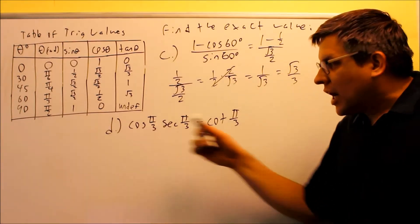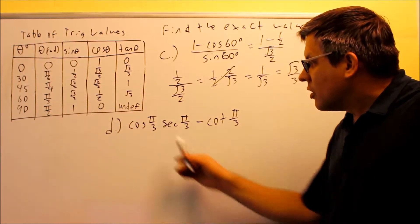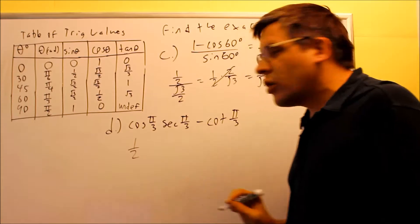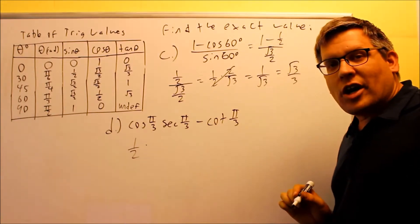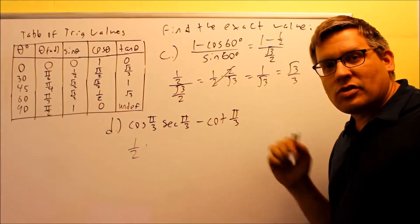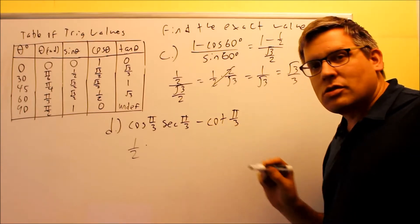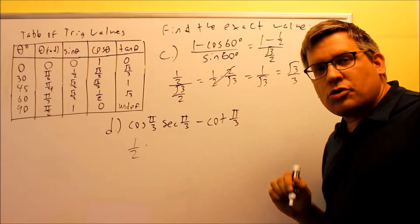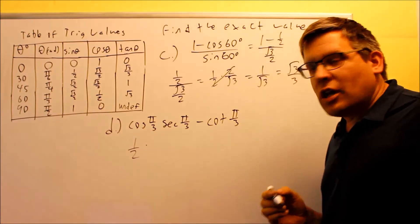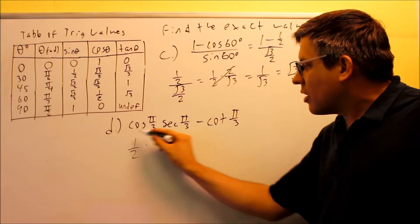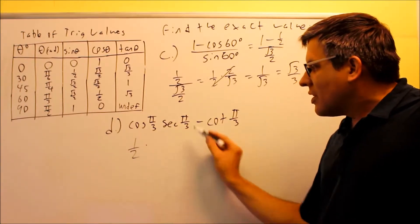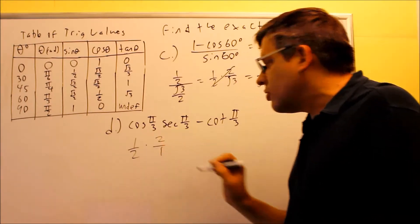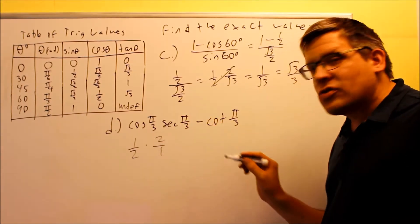Now let's look at D. We have π/3, so we use radians on our table. Cosine of π/3 is 60 degrees — the value from the table is 1/2. Next, they want us to find secant. We don't have secant on our table — we only have sine, cosine, and tangent — but we use the fact that secant is the reciprocal of cosine. So if cosine is 1/2, secant is always going to be the reciprocal: 2 over 1, which equals 2. So secant of π/3 is 2.